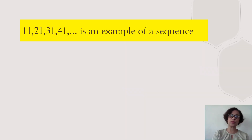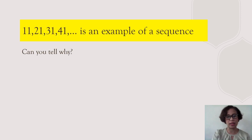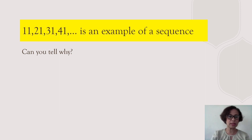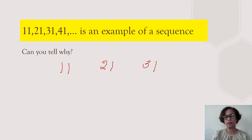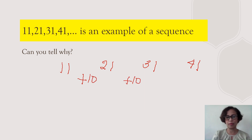I'm going to show you that 11, 21, 31, 41 is an example of a sequence. Can you tell why? Well, obviously it follows a certain pattern — it increases by 10. So you have a plus 10 there, and it is now a sequence.